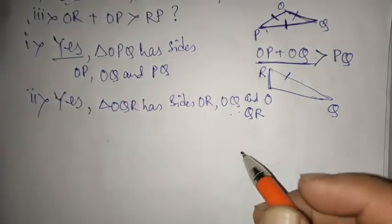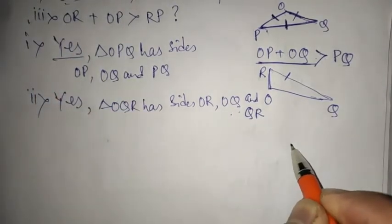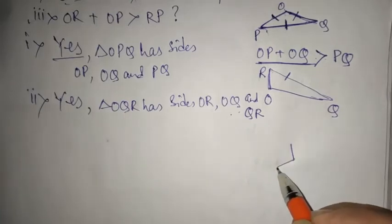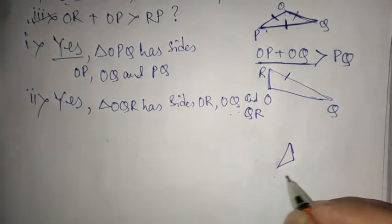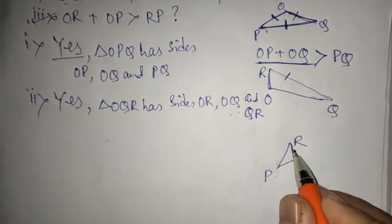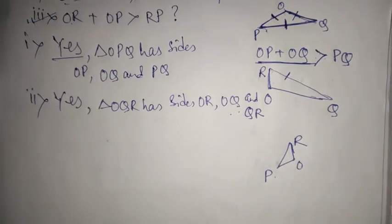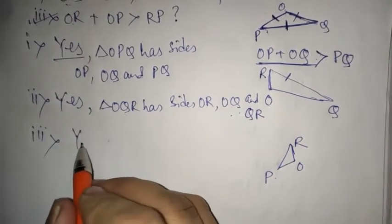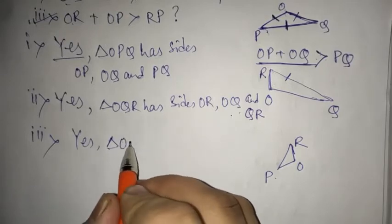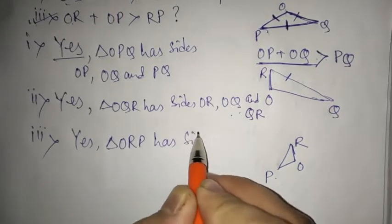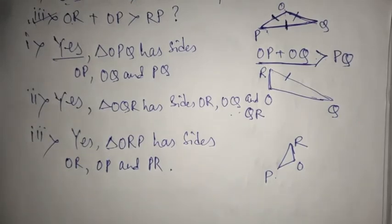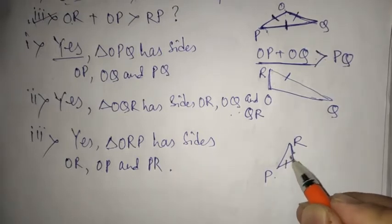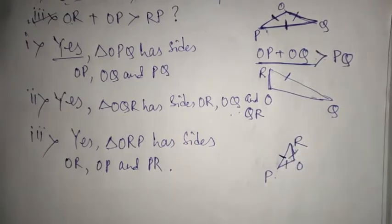Similarly, moving on to part 3 also. Here you have OR and OP. So OR plus OP is greater than RP. Why not? The concept is the same: in triangle ORP with sides OR, OP and PR, when you add two sides it should be greater than the third. The concept used in question 1 is the same concept being applied here.